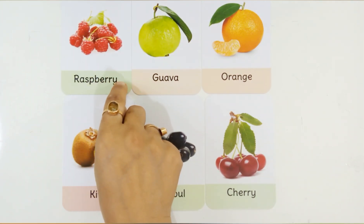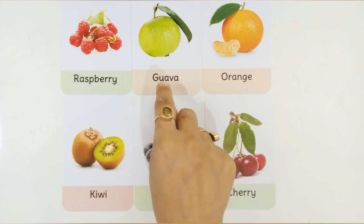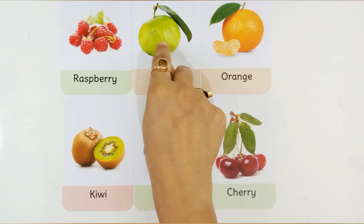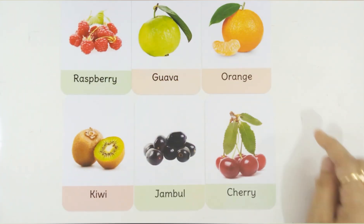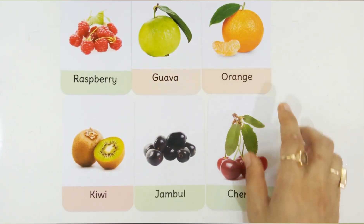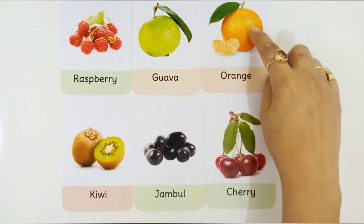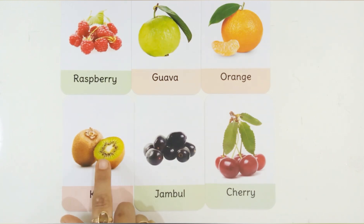R-A-S-P-B-E-R-R-Y, Raspberry. Raspberry is a fruit. G-U-A-V-A, Guava. This is Guava. Guava is a fruit. O-R-A-N-G-E, Orange. This is Orange. Orange is a fruit. K for Kiwi. K-I-W-I, Kiwi. This is Kiwi. Kiwi is a fruit.